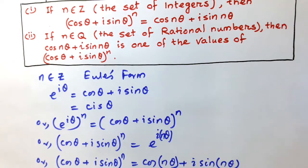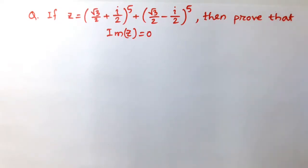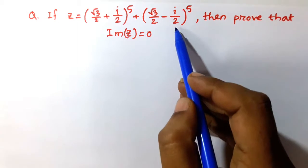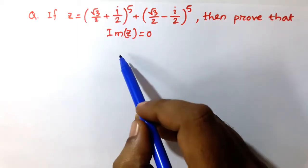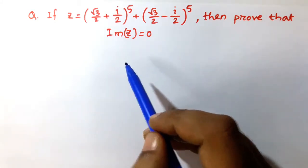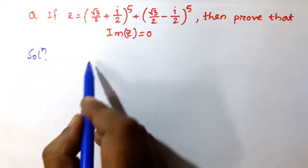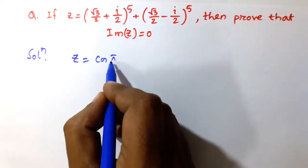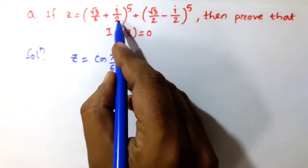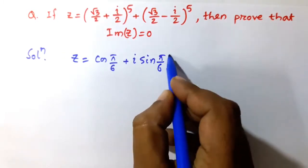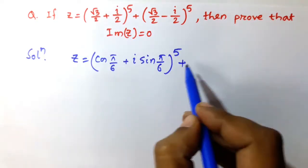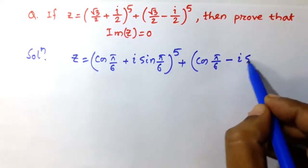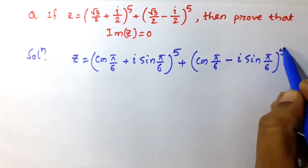I have prepared two problems. The first problem: if z equals (√3/2 + i/2)⁵ + (√3/2 − i/2)⁵, prove that the imaginary part of z equals 0. We note that √3/2 = cos(π/6) and 1/2 = sin(π/6), so z = (cos(π/6) + i sin(π/6))⁵ + (cos(π/6) − i sin(π/6))⁵.